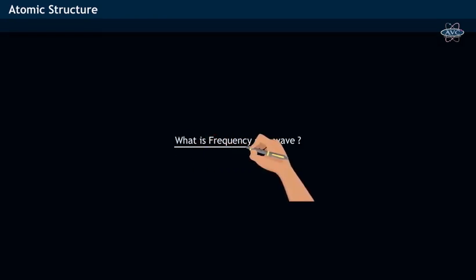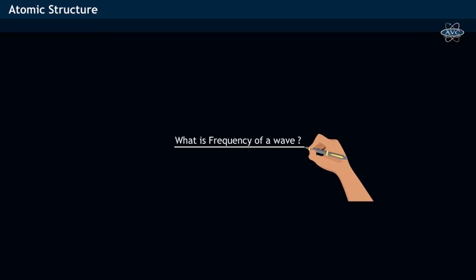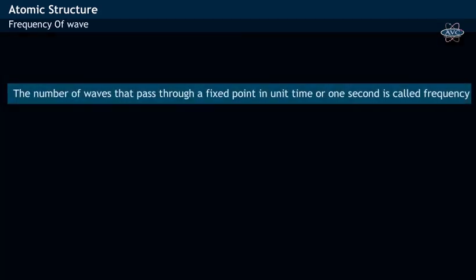What is frequency of a wave? Frequency is defined as the number of waves that pass through a fixed point in unit time or one second.